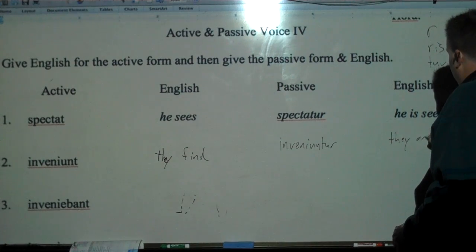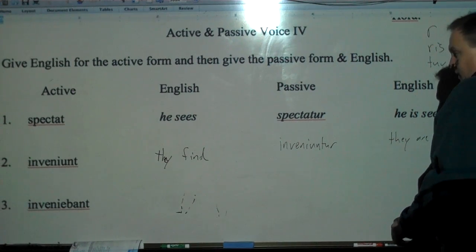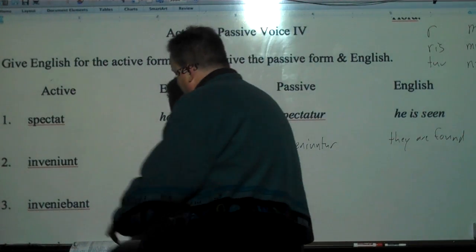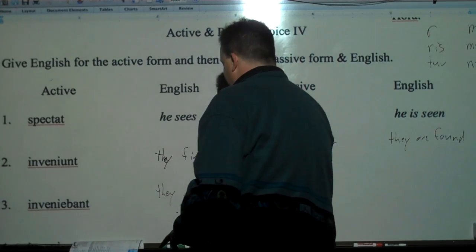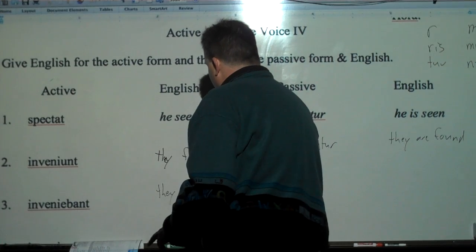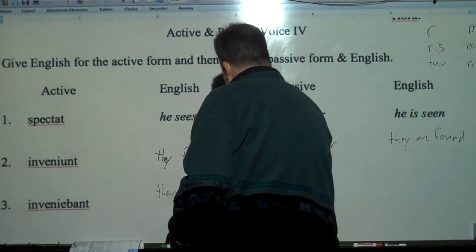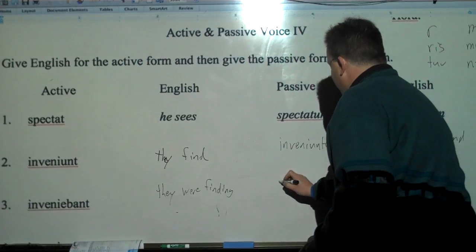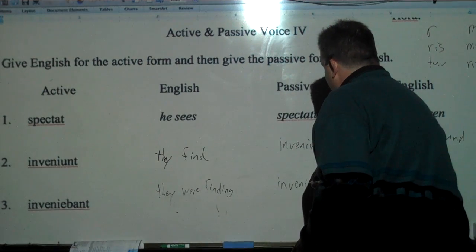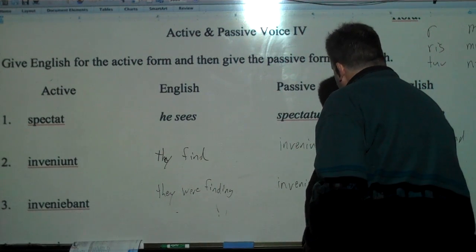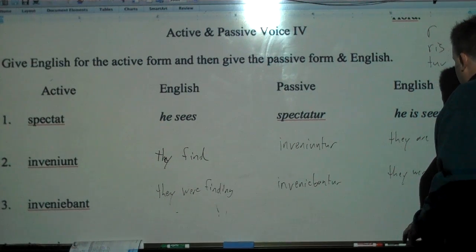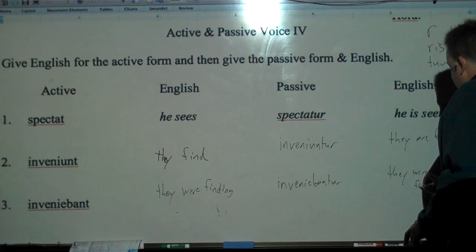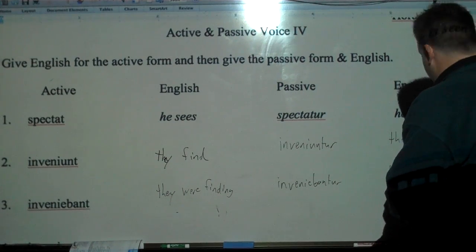They are found. Inveniebot, now that's int and enti again. So it's they. B-A makes it imperfect. So they were finding. And then we make it passive.